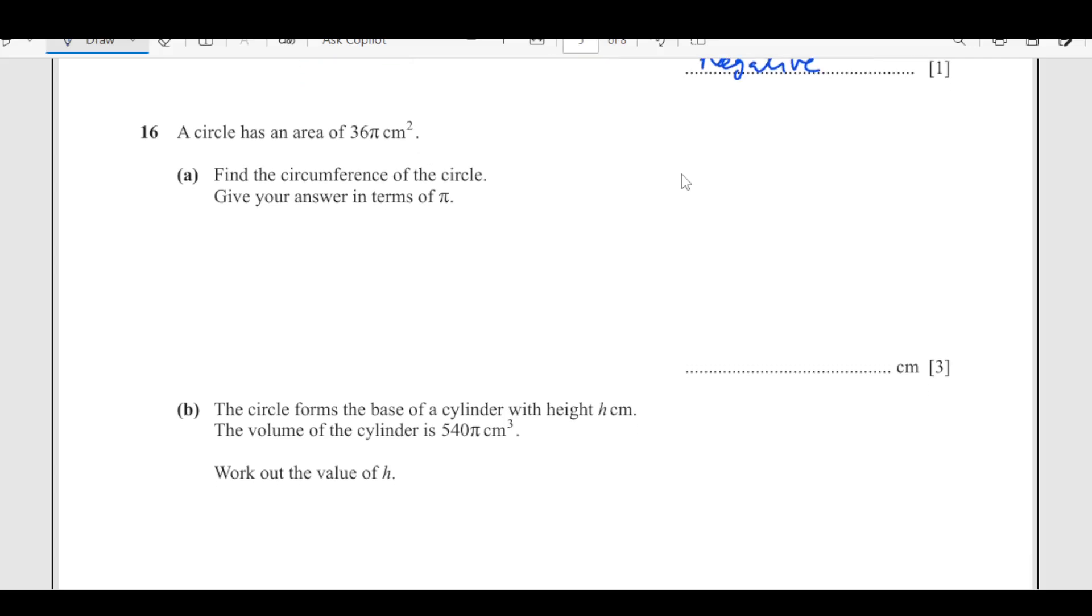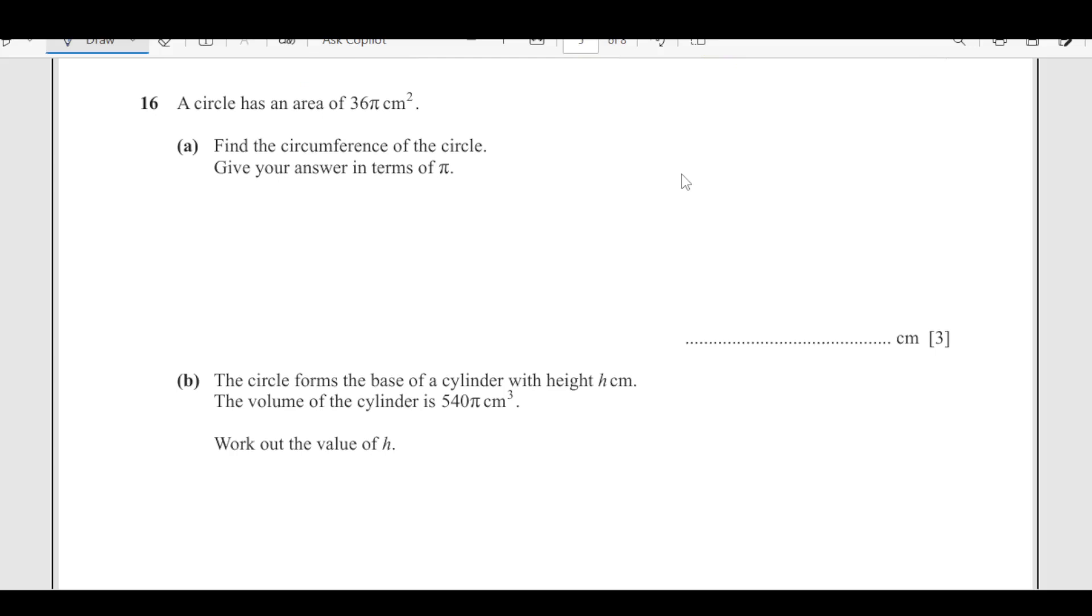Number 16, a circle has an area of 36π squared. Find the circumference of the circle, give your answer in terms of π. The formula of circumference of the circle is 2πr. We do not have radius, so we need to find it. Area of the circle is πr² which is 36π. So r² is 36, and then r is 6. We substitute here, 2π times 6, 6 times 2 is 12π. The answer in terms of π is 12π.